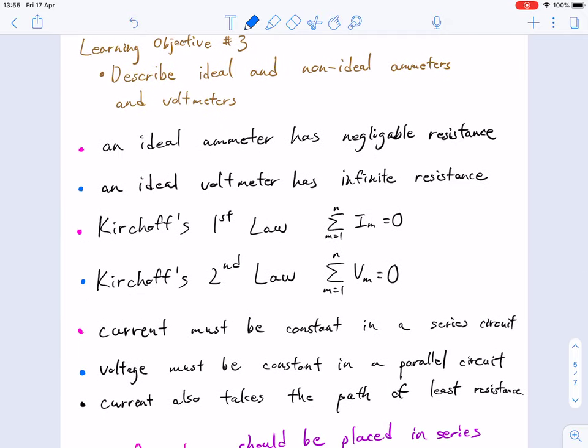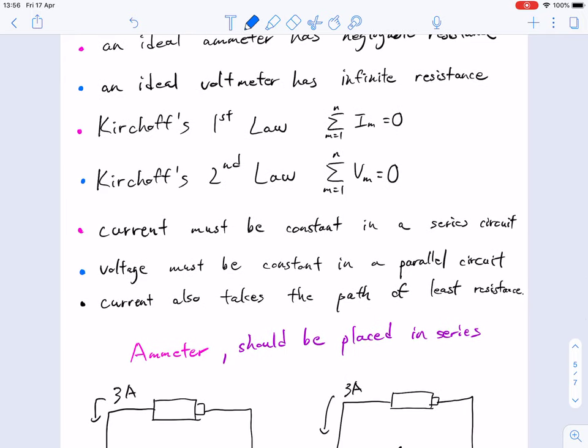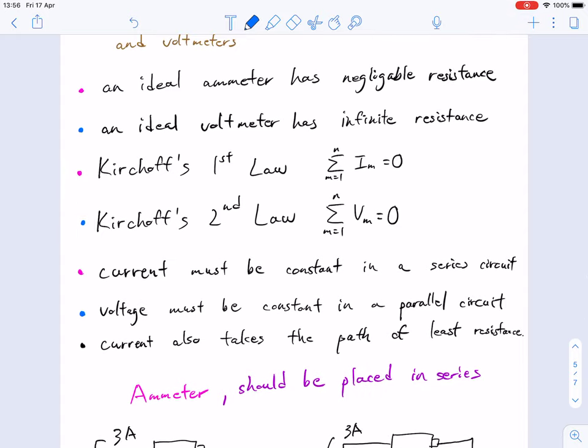Our last learning objective is to look at ideal and non-ideal ammeters and voltmeters. Non-ideal is the opposite. An ideal ammeter has negligible resistance, so a non-ideal one has very high resistance. The same for voltmeters: an ideal voltmeter has infinite resistance, so a non-ideal one has very low resistance. This is related to Kirchhoff's law that we studied last time. I've got blue and pink markers to help you identify common things associated with each law.